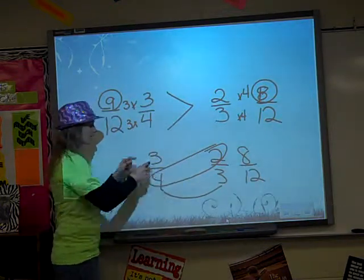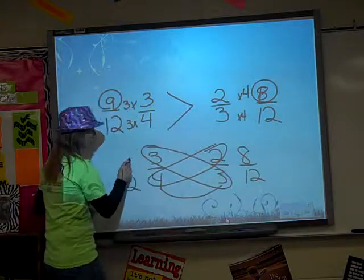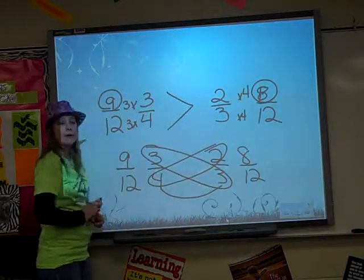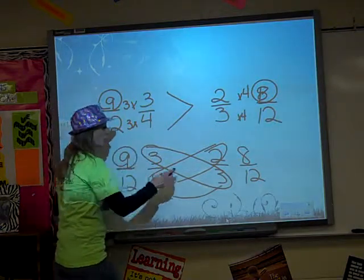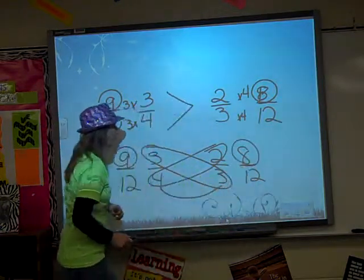Over here I did the 4 times the 3, so now I need to do the 3 times the 3, and 3 times 3 is 9. But when you do the butterfly method, what you're really doing is getting the numerator for your new equivalent fractions.